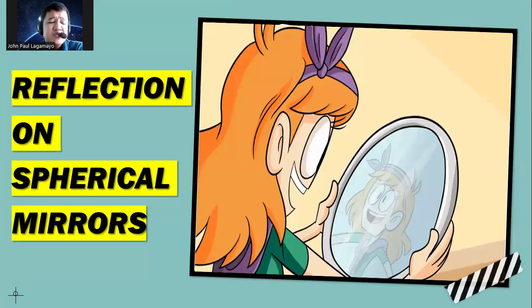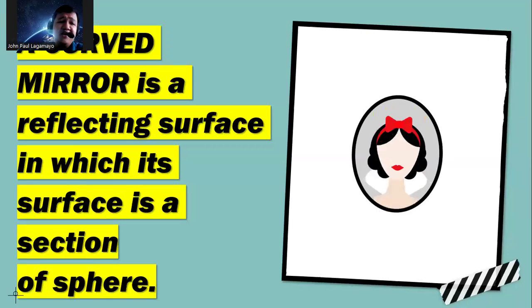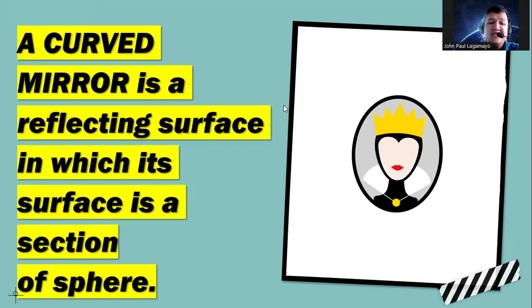Now we have also your reflection on spherical mirrors. When we say spherical, we call any section of a sphere—that is what we call as the curved mirror. And this is a reflecting surface in which its surface is a section of a sphere.